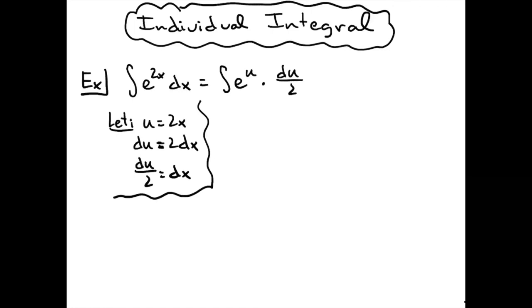What that's going to allow us to do then is to pull out a 1 half out of our integral and then we'll have 1 half times the integral of e to the u du. We are now down to something that we can integrate.